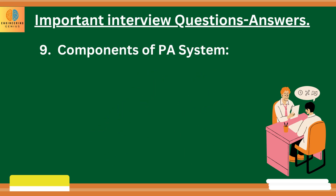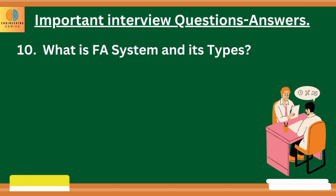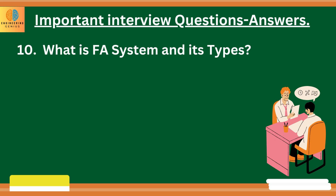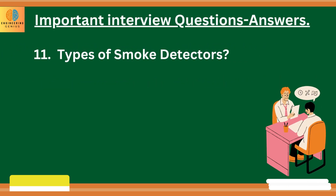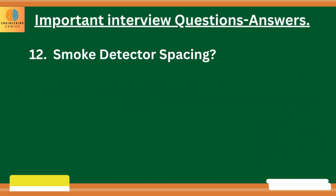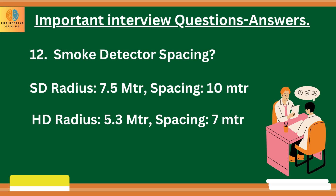If you want a detailed video on interview questions on public address system, do comment. The last question can be on fire alarm system: what is a fire alarm system and its types? A fire alarm system is a building system designed to detect and alert occupants and emergency forces of the presence of smoke, fire or any toxic gases. The two main types are conventional and addressable. There are three types of smoke detectors: ionization, photoelectric, and a dual combination of the two. Smoke detector radius is 7.5 meters and spacing between two smoke detectors is 10 meters. For heat detectors, the radius is 5.3 meters and spacing is 7 meters. For corridors, the maximum spacing can be 15 meters.